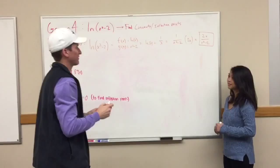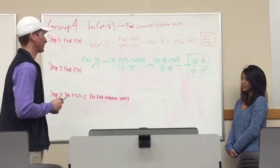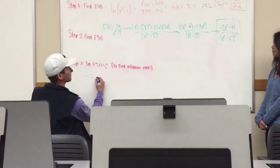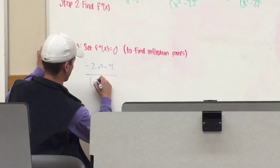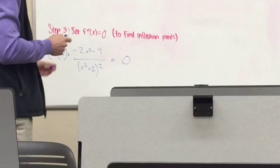This is our first derivative. From this point we're going to find our second derivative. Now that the second derivative has been found, our objective is to set that second derivative equal to zero in order to find inflection points. Inflection points help us understand the concavity and behavior of the function as a whole. So we start with our second derivative and set it equal to zero.